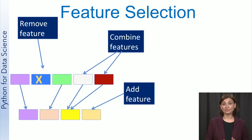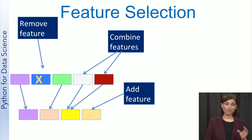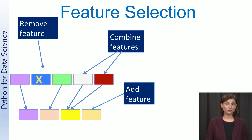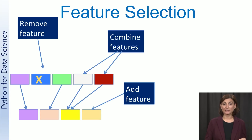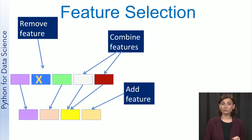During the exploring data step, you may have discovered that two features are very correlated. In that case, one of these features can be removed without negatively affecting the analysis results. For example, the purchase price of a product and the amount of sales tax paid are likely to be very correlated. Eliminating the sales tax amount, then, will be beneficial.